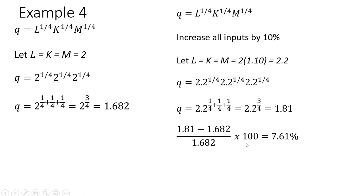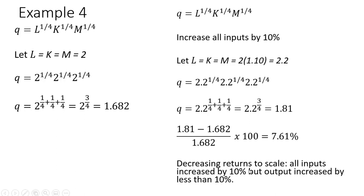The percentage increase in output, going from 1.682 to 1.81, given by the percentage change formula, is only 7.61%. We increased all our inputs by 10% and output went up by less than 10% — that's an indication of decreasing returns to scale. If output had increased exactly by 10%, we'd have constant returns to scale; if output increased by more than 10%, that would be increasing returns to scale.